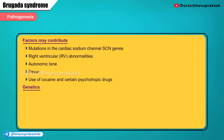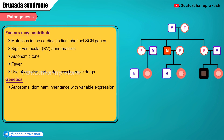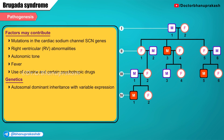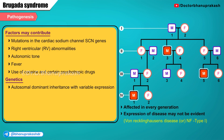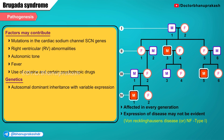Genetics: the Brugada syndrome demonstrates autosomal dominant inheritance with variable expression. Although autosomal dominant implies that every generation is affected, variable expression implies that although the defective gene is inherited, the full-blown nature of the disease may not be evident in all generations. A classical example of autosomal dominant inheritance with variable expression is neurofibromatosis type 1. In these diseases, the defective gene is transmitted to subsequent generations, but the full-blown expression is not evident in all generations to which the gene has been transferred. The same applies to Brugada syndrome.